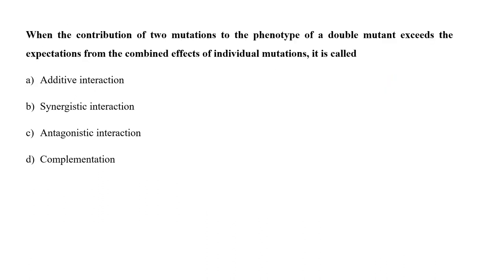When the contribution of two mutations to the phenotype of a double mutant exceeds the expectation from the combined effects of the individual mutations, it is called A. Additive interaction, B. Synergistic interaction, C. Antagonistic interaction, or D. Complementation? Synergistic interactions occur when the combined effect is greater than the sum of individual effects — multiple stressors produce a cumulative effect greater than their additive sum. Antagonistic interaction is the opposite, producing a cumulative effect less than the additive sum. So the correct answer is option B.